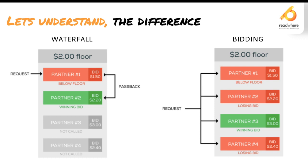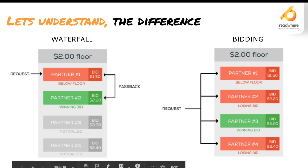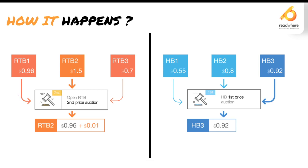The new technology is unified bidding — it compares all demand partners and their bids in real time, and whoever is paying the most wins that impression. There are two mechanisms for bidding: the second price auction, followed previously, and the first price auction used now. In a second price auction, the highest bidder wins but pays only one cent more than the second-highest bid. For example, if bidder two bids $1.50, bidder one bids $0.96, and bidder three bids $0.70 — bidder two wins but pays $0.97.